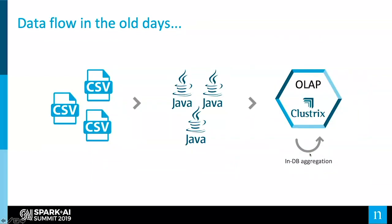Let's look at our data flow in the old days, using an example I'll reference throughout the presentation. It's somewhat simplified but will show how we re-architected our infrastructure over the years. From left to right, in the old days we had events written to CSV files. Those CSV files were being processed by Java standalone applications, which were stateless — they only did various transformations — and then they inserted the data into what was then our OLAP engine, which was based on Clustrix, a distributed MySQL engine. We used Clustrix both as our operational database — the OLTP — and also as our OLAP database.